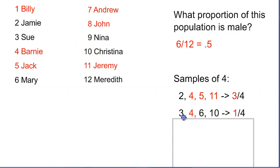Another one here, let's say 3, 4, 6, 10, corresponds to only one male in the group. And then finally, 5, 6, 9, 11, just four random numbers, corresponds to 2 out of 4, 50%, 0.5. So sometimes, our samples are going to be pretty much right on with the population. Sometimes, they are going to be a ways off.